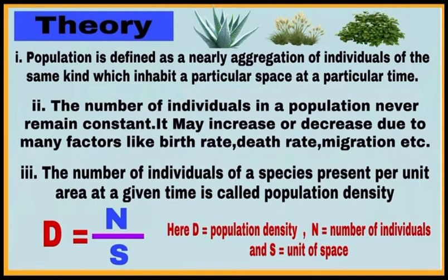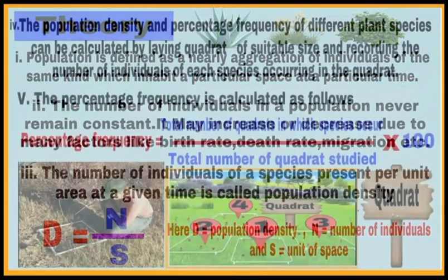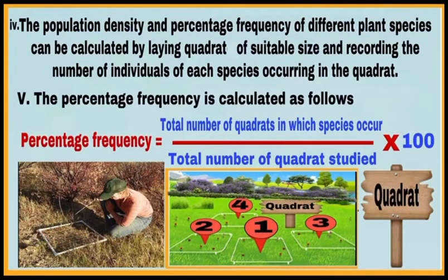Population density is the number of individuals of a species present per unit area. To calculate population density of a species, we use the formula D = N / S, where D is the population density, N is the number of individuals, and S is the unit of space or unit of area. The quadrat method is used to calculate population density and population frequency.